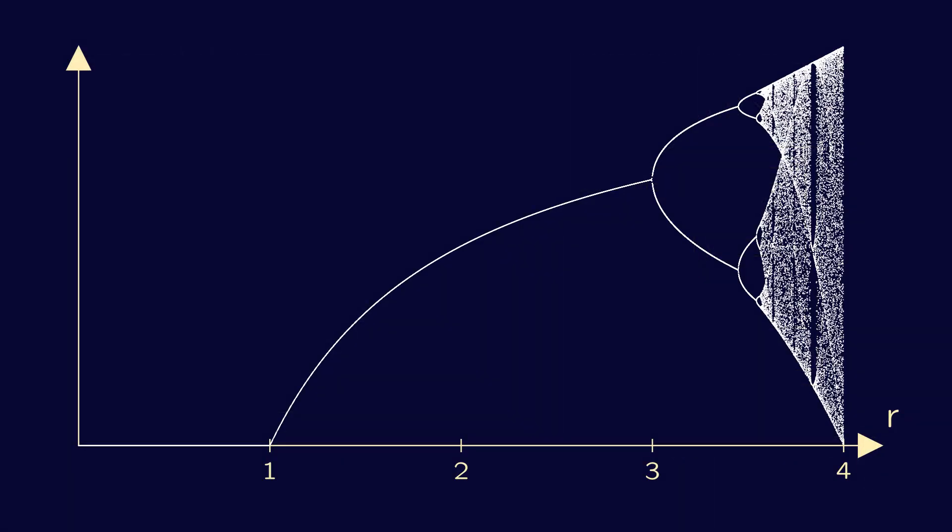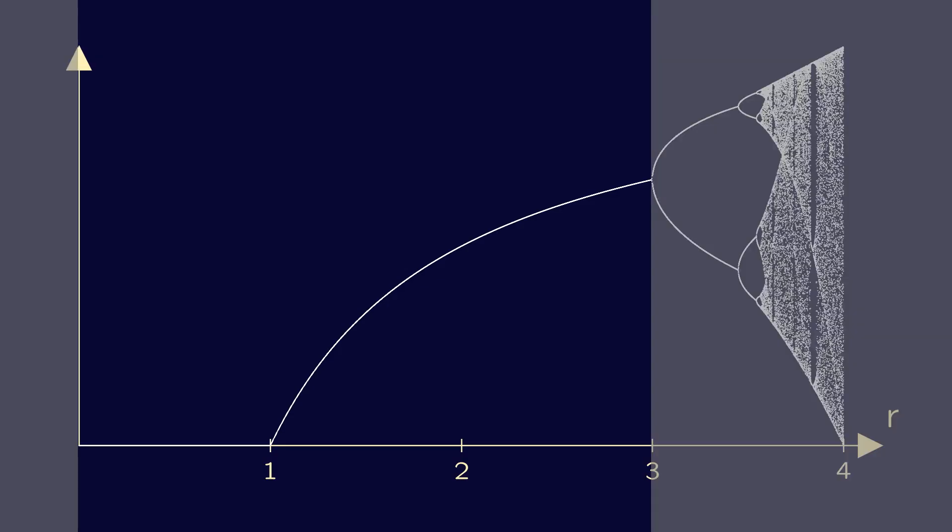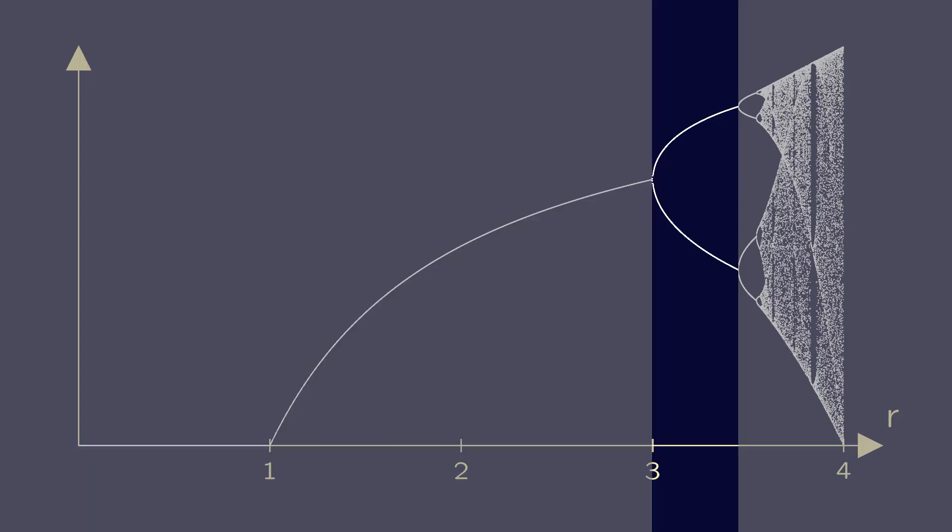For each value of r on the horizontal axis, it shows the values a solution takes after it has been given time to settle. So if there is one point, this is the value the solution converges to. If there are two points above each other, the solution will oscillate between these two values.